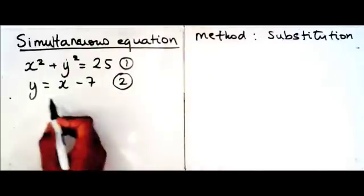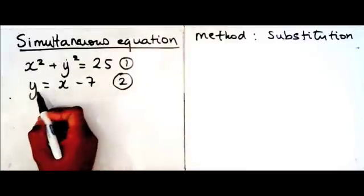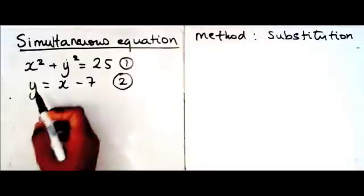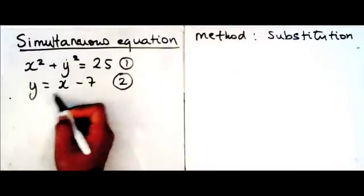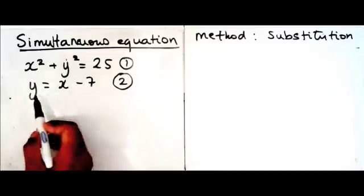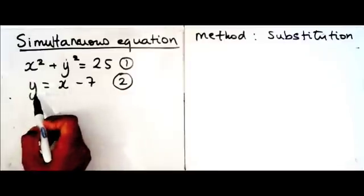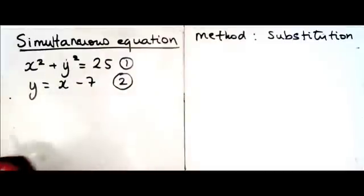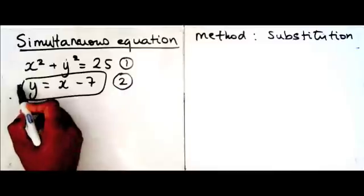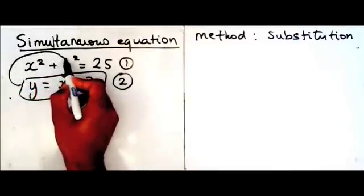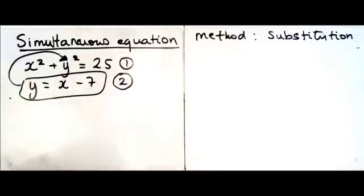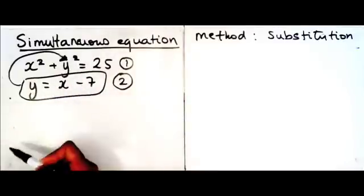The first thing you're going to do is look at the linear equation. Here we've got y is equal to x minus 7. You're going to make either y or x the subject of the formula — basically, you want one of the letters to be on its own. In this case, y is already on its own, so you're going to take that and replace the y in equation number 1 with x minus 7, because y is equal to x minus 7.